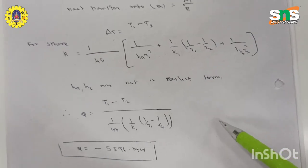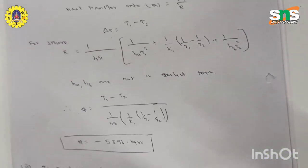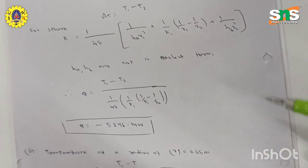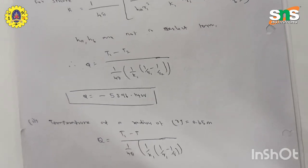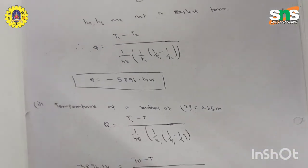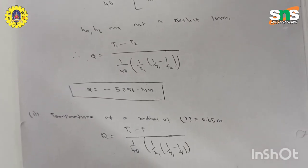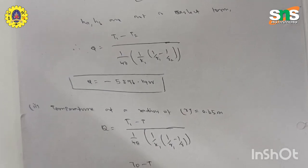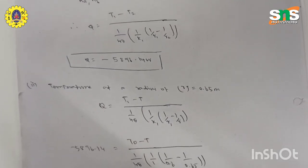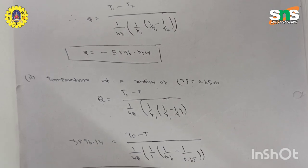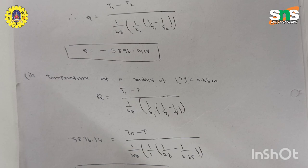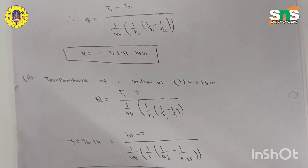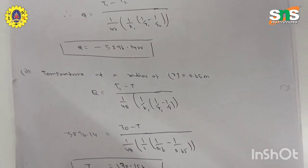To find the temperature at radius R = 0.65 m, we use the basic heat transfer equation: Q = (T1 − T) / [1/(4π) × (1/K1) × (1/R1 − 1/R)]. Substituting Q = −5896.14 W, T1 = 70 K, K1 = 1, R1 = 0.6 m, and R = 0.65 m, we get the temperature T = 130.15 Kelvin.